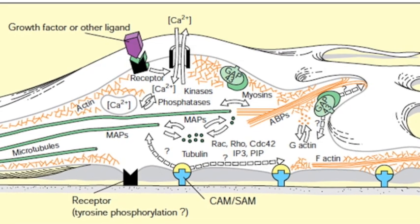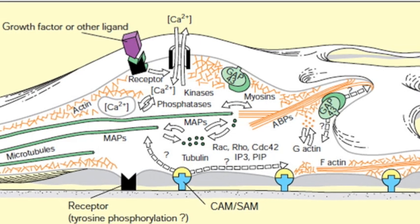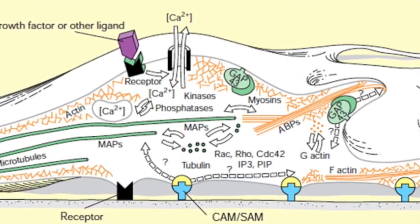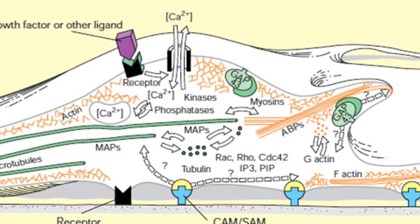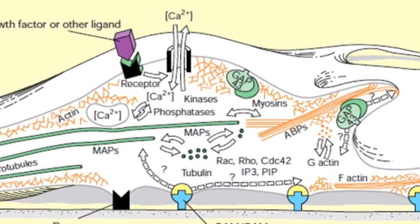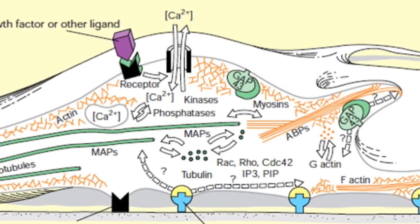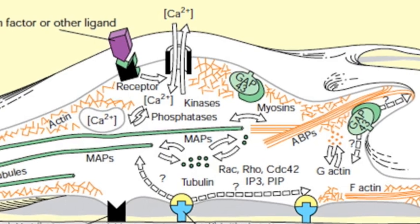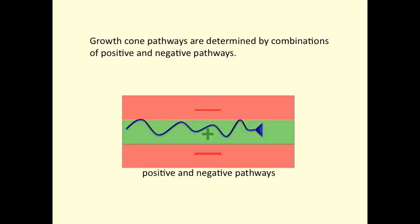Proteins embedded in the plasma membrane are receptors for these guidance molecules. When the receptors detect their specific guidance molecule, a signal is transmitted in the growth cone to regulate the cytoskeleton. Adhesion molecules pave the pathways that growth cones follow, while surfaces coated with repulsive molecules disrupt growth cone adhesion and act as guard rails that channel growth cones along the proper pathway.